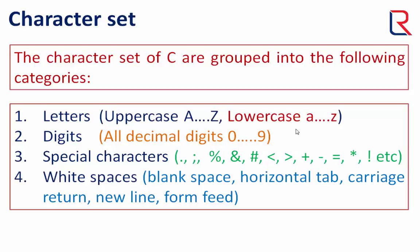Letters include all English language alphabets. We use all uppercase and lowercase letters of English, that is A to Z capital and A to Z small, in C language. Digits contain all decimal digits 0 to 9 which we use generally. Special characters include symbols like dot, comma, percent, plus, minus, and all symbols which we use in computers generally from the keyboard.